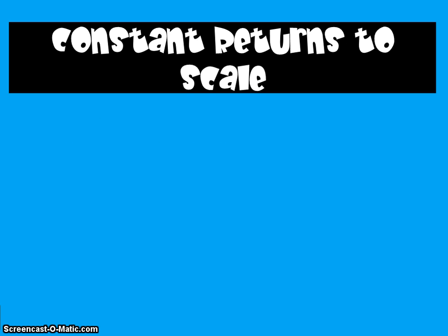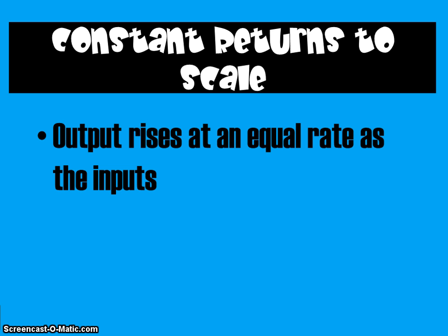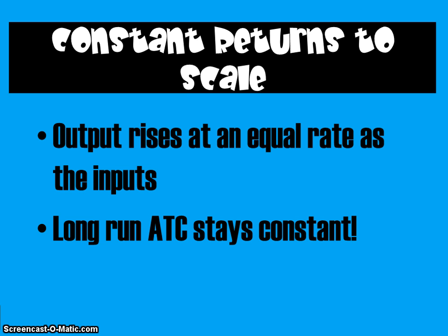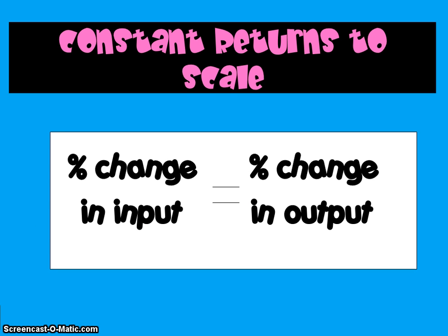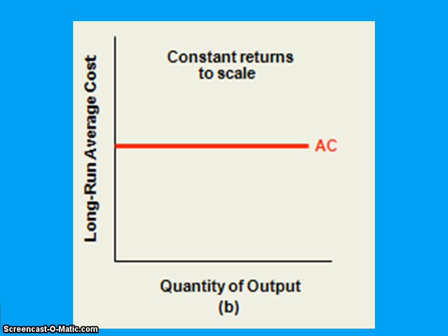The second possible scenario in the long run is constant returns to scale, where output rises at an equal rate as the inputs and long-run average total cost stays constant for a period of time. You know you're experiencing constant returns to scale if your percentage change in input is exactly equal to your percentage change in output — say you double your labor force and you double your output. This is the flat base of the long-run average total cost curve.